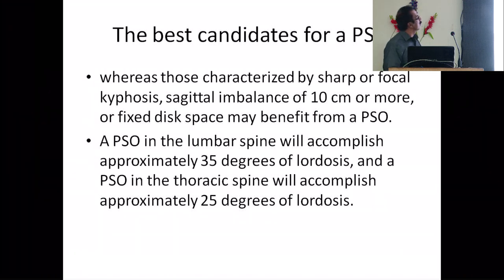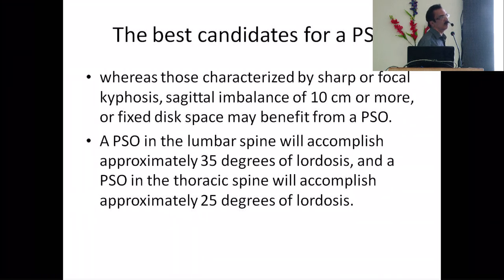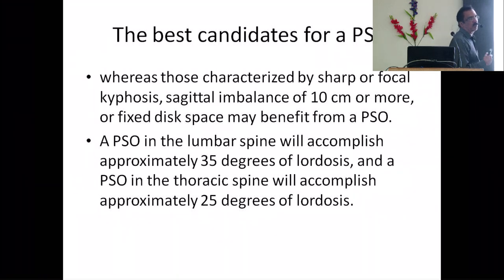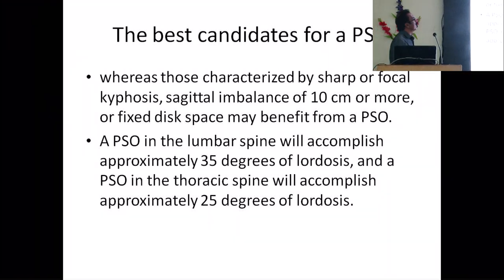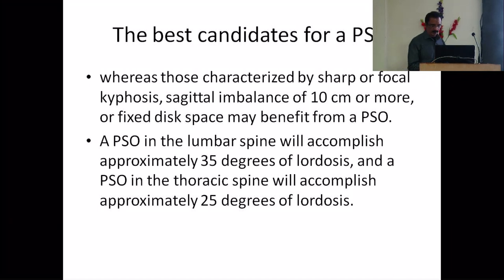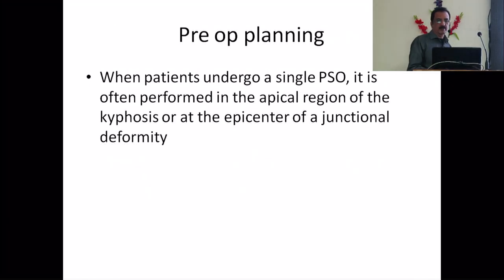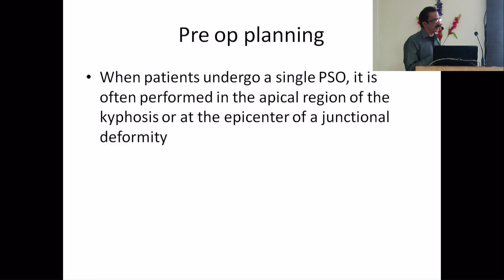The best candidate for PSO is sharp or focal kyphosis with sagittal imbalance of more than 10 centimeters, or a fixed disc space. In those cases it is better to go for a PSO rather than a PCO. Pedicle subtraction osteotomy is better than posterior column osteotomy here because with PCO you have to do multiple level osteotomies to get the correction, whereas with PSO a single segment osteotomy is sufficient — so your instrumentation construct is also shorter.